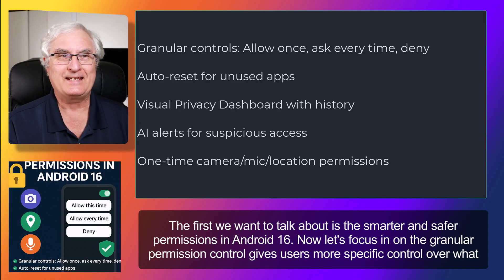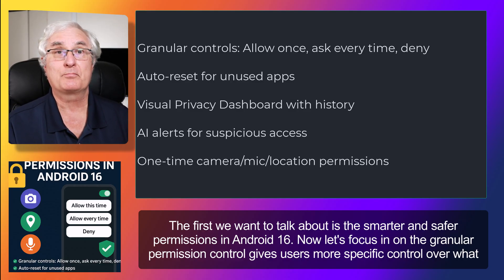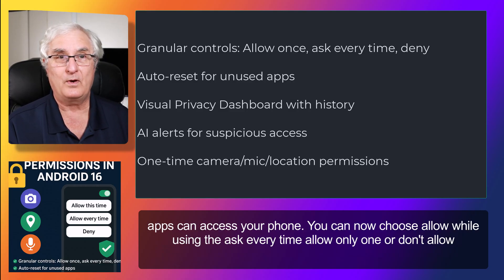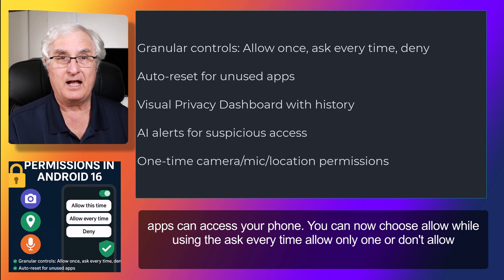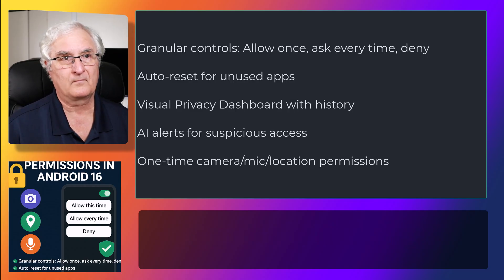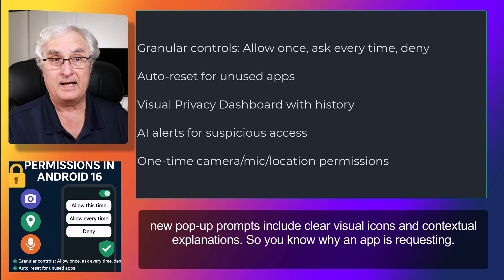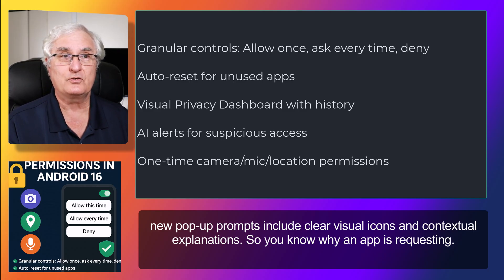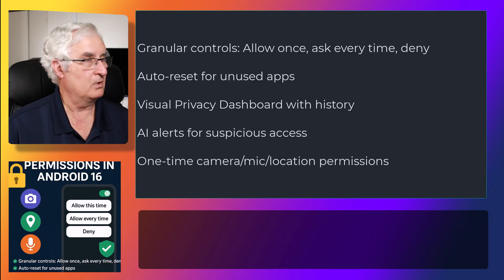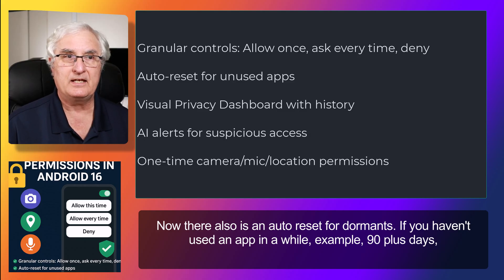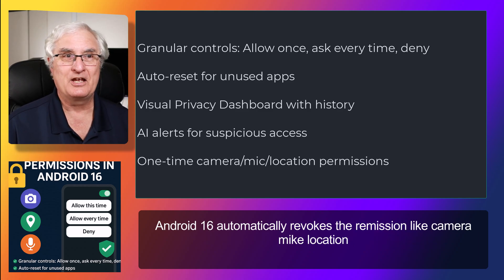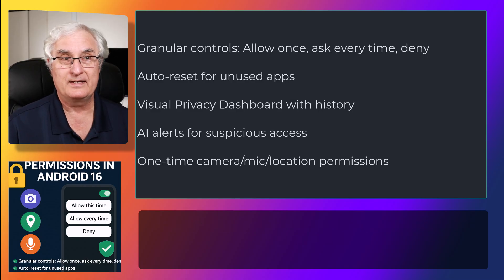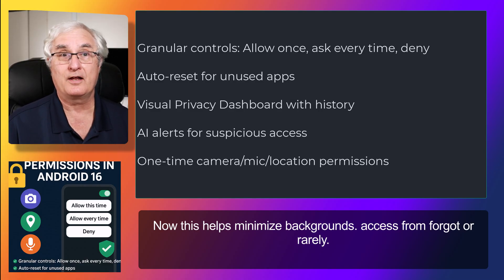The first feature to talk about is smarter and safer app permissions in Android 16. Android 16 gives users more specific, granular control over what apps can access on your phone. You can now choose: allow while using the app, ask every time, allow only once, or don't allow. New pop-up prompts include clear visual icons and contextual explanations so you know why an app is requesting access. There's also an auto-reset for dormant apps — if you haven't used an app in a while, for example 90-plus days, Android 16 automatically revokes its permissions like camera, mic, and location, helping minimize background access from forgotten or rarely used apps.